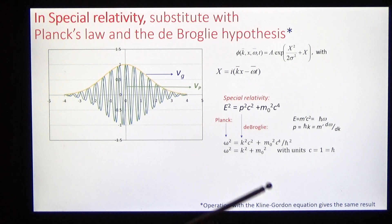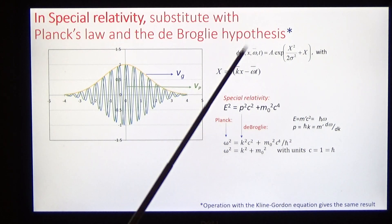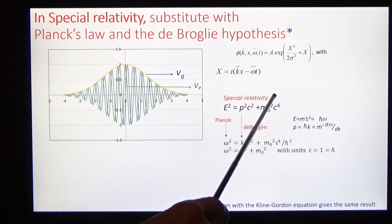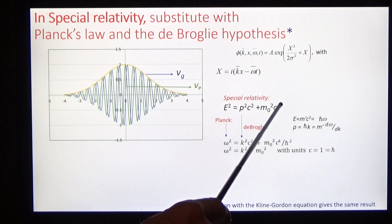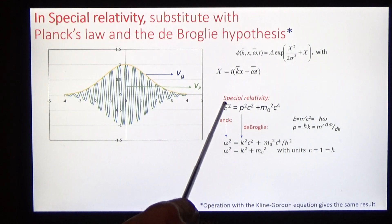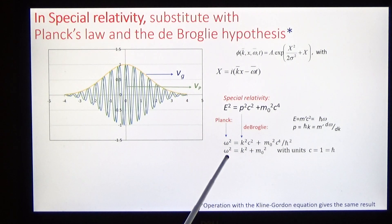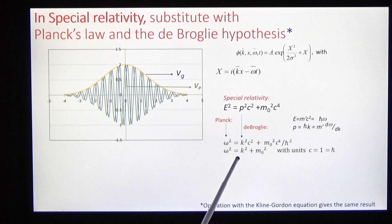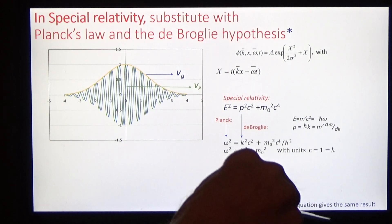We'll start with special relativity and transform it with Planck's law and the de Broglie relationship to get this simple formula in simplified units.